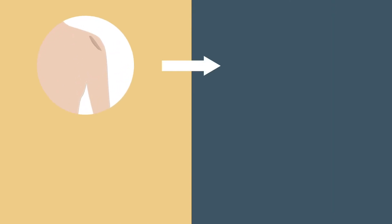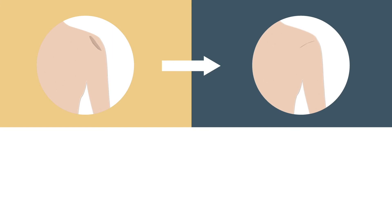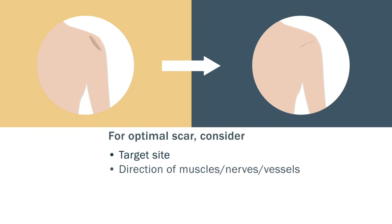Thus, to minimize hypertrophic scarring in young patients, surgeons planning incisions should comprehensively consider the target site, the direction of underlying muscles, nerves, and vessels, as well as other critical factors.